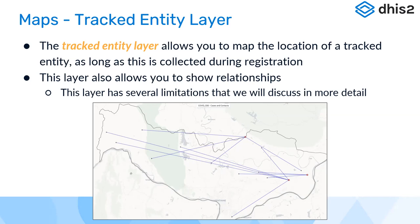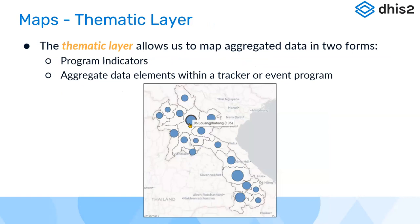Finally, the thematic layer allows us to map aggregate data in two forms: program indicators, and aggregate data elements within a tracker or event program. Both can be visualized using the thematic layer, but we are not going to cover this layer during today's demonstration.